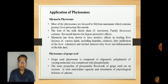Another example of phytosome: Phytosome of grape seeds. Grape seed phytosome is composed of oligomeric polyphenols of varying molecular size complexed with phospholipids. The main properties of procyanidin flavonoids of grape seed are an increase in total antioxidant capacity and stimulation of physiological defenses of plasma.